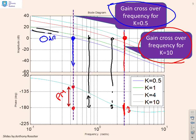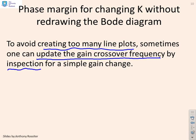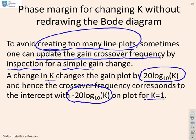However, having to sketch four separate Bode diagrams is not ideal in general. We want to find an alternative: can we update the gain crossover frequency by inspection instead of creating a new line plot? For the specific case of a simple gain change, a change in k corresponds to a shift of 20·log₁₀(k) dB in the gain plot. Therefore, the new crossover frequency corresponds to the intercept of the k=1 Bode diagram with the minus 20·log₁₀(k) line.